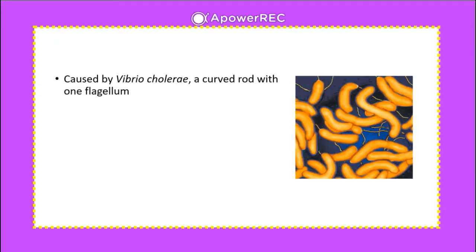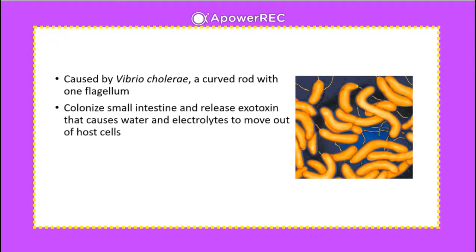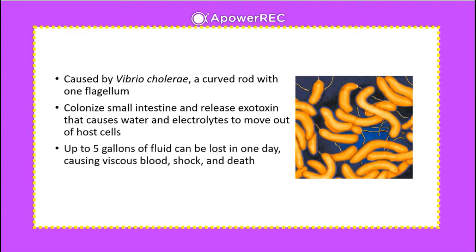Cholera is caused by the bacterium Vibrio cholerae, a curved rod with one flagellum. It colonizes the small intestine and releases an exotoxin that causes water and electrolytes to move out of host cells. This can lead to up to five gallons of fluid loss in one day, causing viscous blood, low blood pressure, shock, and death. Untreated mortality is 50%; with treatment it drops to about 1%.